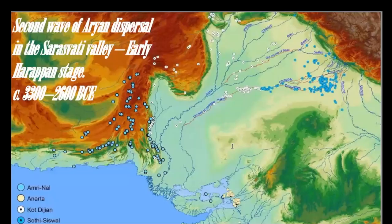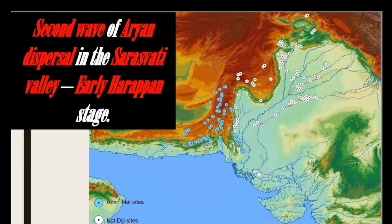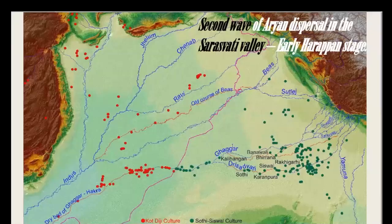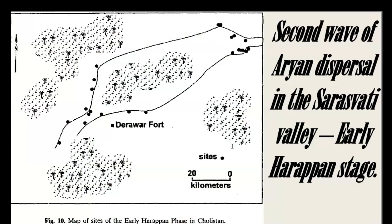The second wave of Aryan dispersal in the Sarasvati valley was the early Harappan, dated between 3300 to 2600 BC, represented by settlements of four archaeological cultures: Amri, Anarta, Kot Diji, and Sothi-Siswal. In the maps you can see all of them — Amri sites, Kot Diji sites, and Sothi-Siswal culture settlements situated in the upper reaches of Ghaggar-Hakra and Sarasvati near the Yamuna river. And this is the Derawar Fort settlements during the early Harappan phase in Cholistan.